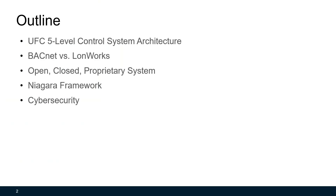This is today's presentation outline. We're going to first look at the UFC five-level control system architecture, then compare BACnet versus LonWorks, then explain the concept of open, closed, and proprietary systems, followed by Niagara Framework, and we're going to touch on cybersecurity.